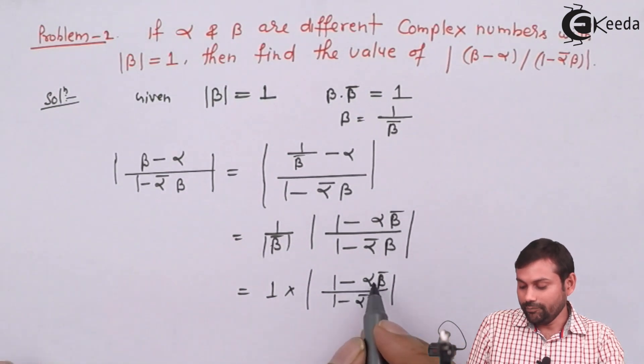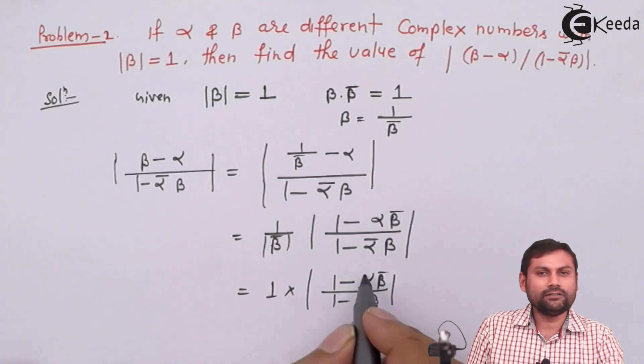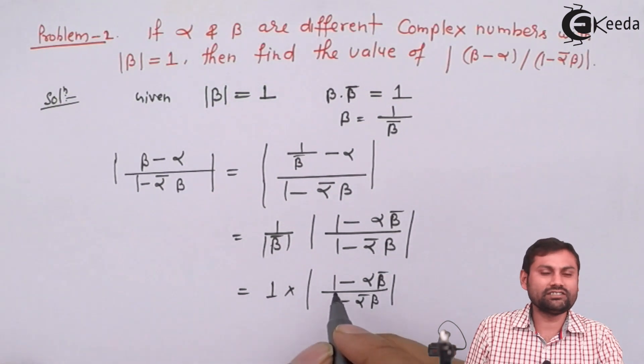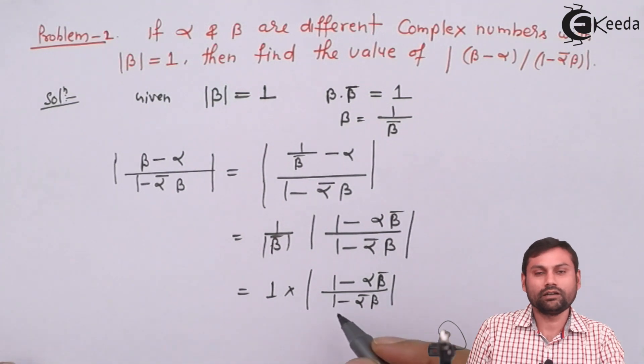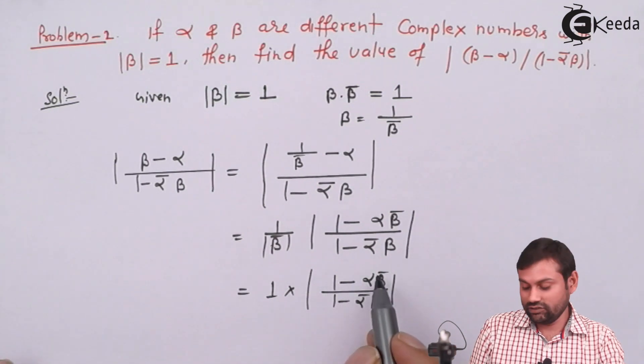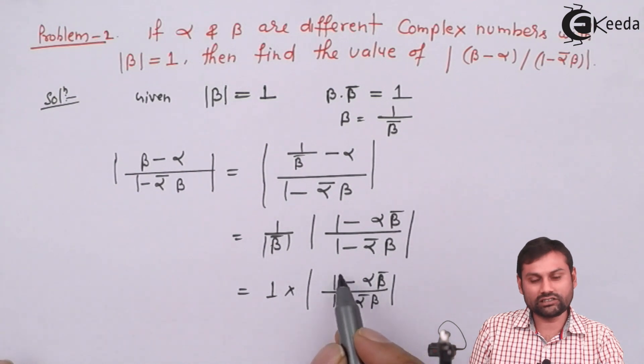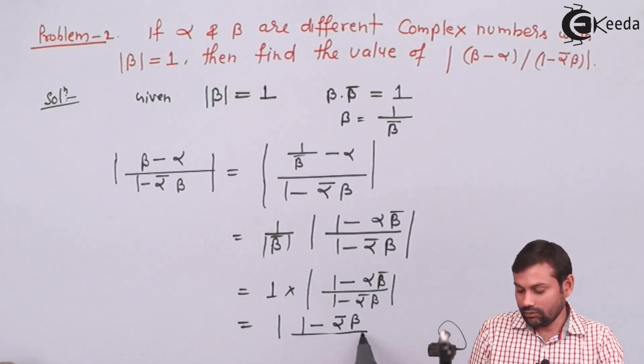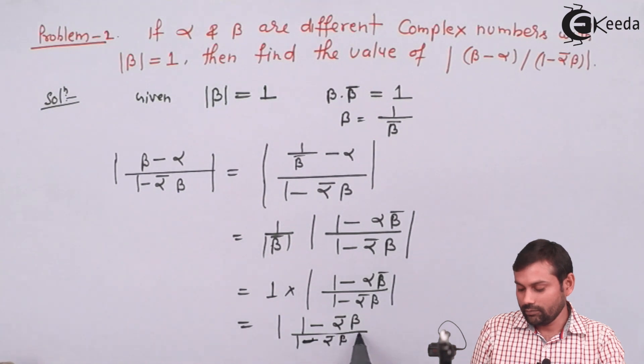Now, there is a property that modulus of z is the same as modulus of z̄. If we take the conjugate of this complex number, we get mod of (1 - ᾱβ)/(1 - ᾱβ).